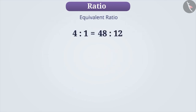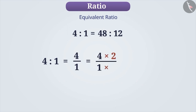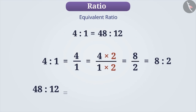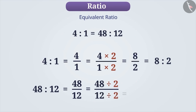For example, 4 is to 1 equals 4 by 1, which equals 8 by 2, which equals 8 is to 2. Similarly, 48 is to 12 equals 48 by 12, which equals 24 by 6, which equals 24 is to 6.